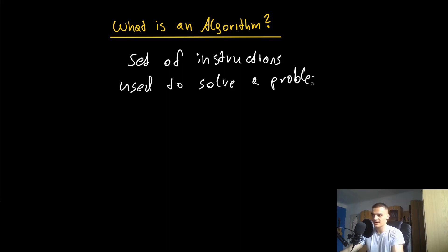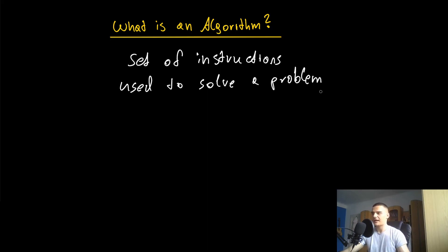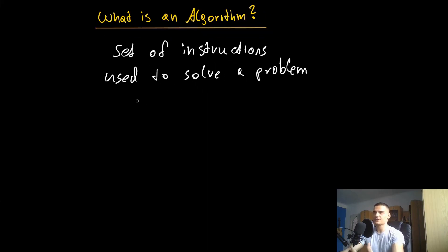Now, 'problem' is always a very interesting term. Problem essentially means task — so whatever you want to do: sorting a list, finding the shortest path from A to B, finding the minimum spanning tree of a graph, finding the maximum element of a list. It's always called a problem. It's just a goal, a task that you want to achieve. And the set of instructions you need to do so is called an algorithm.